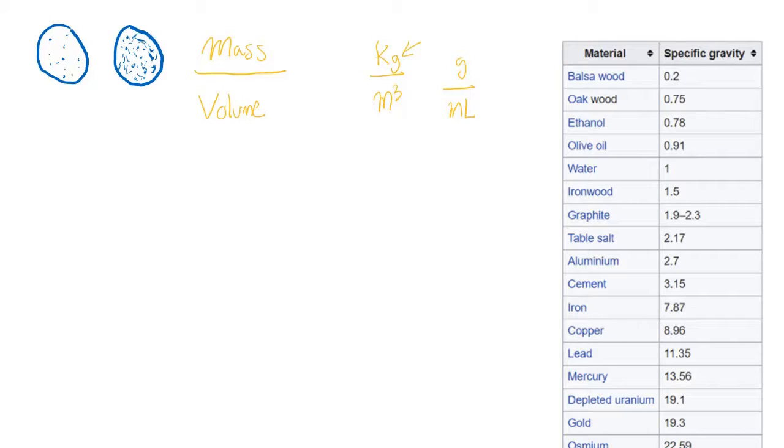So on the MCAT, you might see a problem where you're given two of the three. You're given either mass, volume, or density. And you're asked to figure out the third one. So you'd want to look for a mass, and you'd want to look for a volume, or you'd want to look for a value like this. And from that, you can calculate density. That's pretty straightforward.